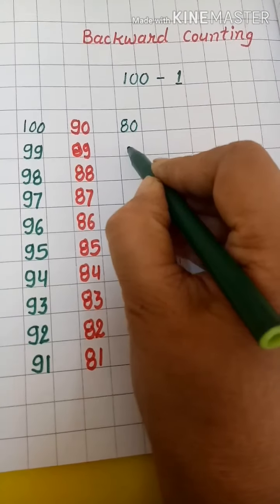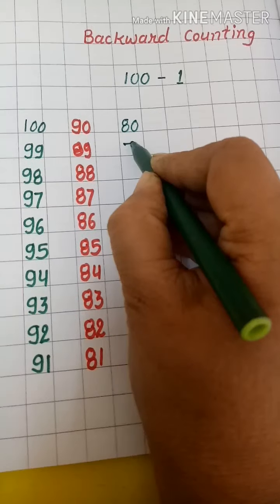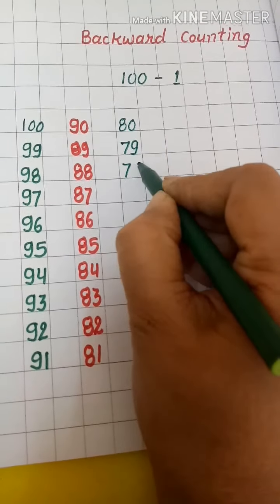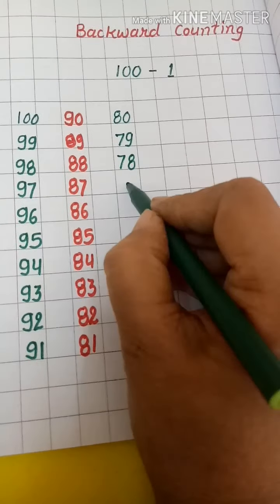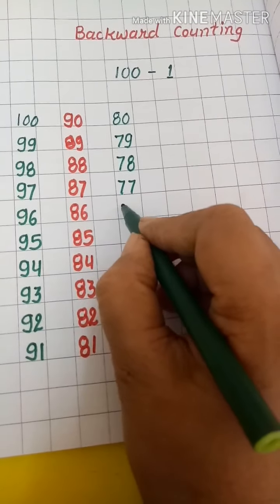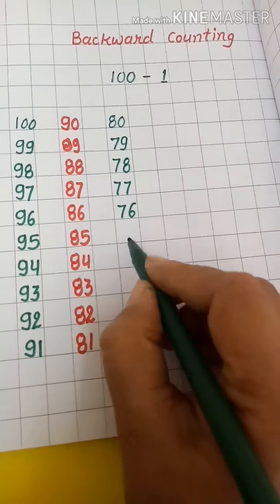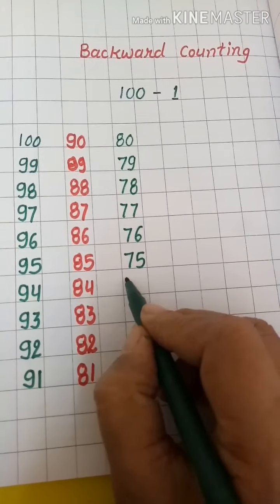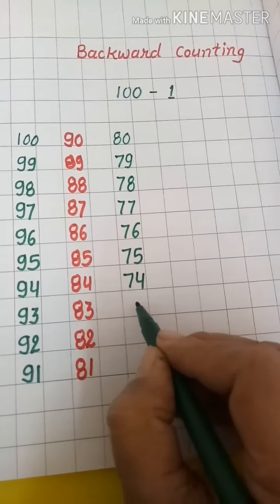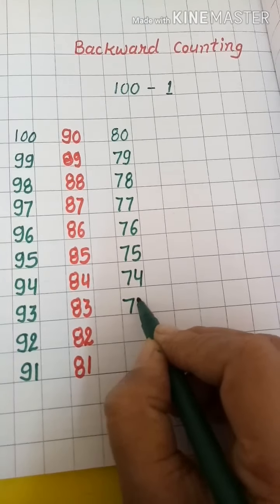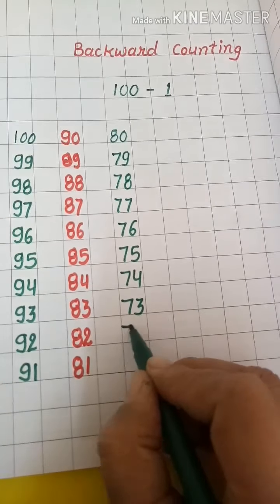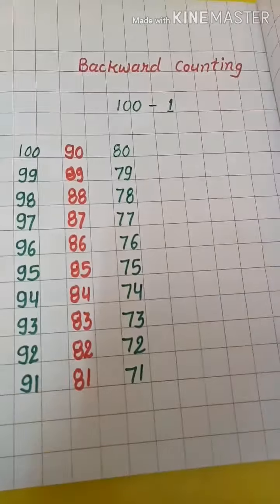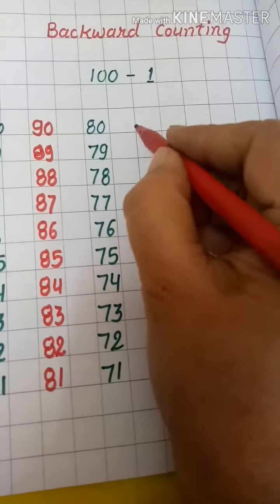Seventy-nine, seventy-eight, seventy-seven, seventy-six, seventy-five, seventy-four, seventy-three, seventy-two, seventy-one, next is seventy.